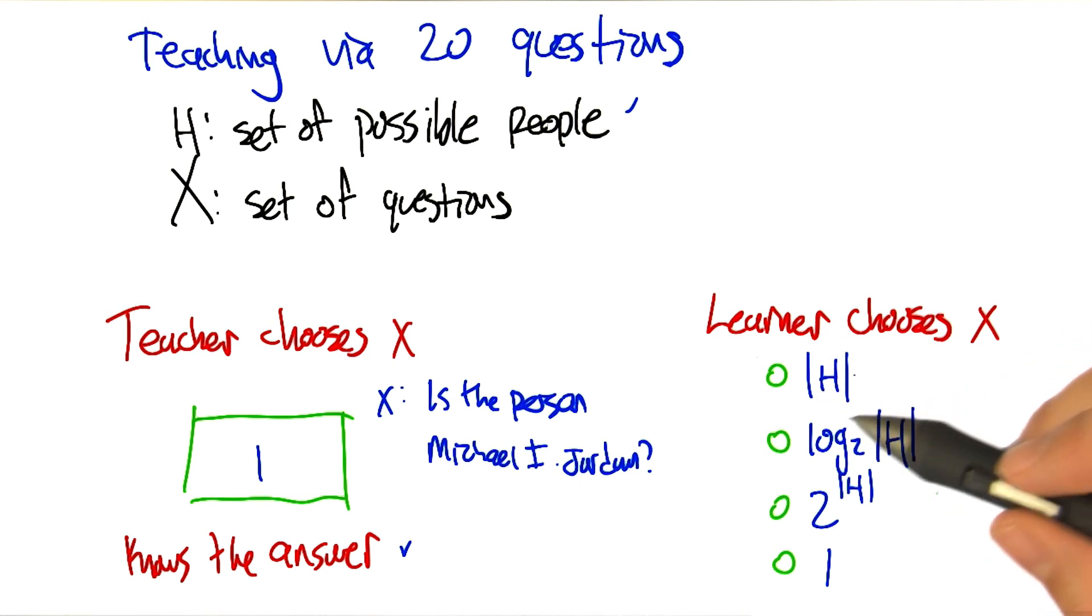So I gave four helpful formulae here, all in terms of the number of people that we have to choose from. Do we have to ask questions that is the size of the set of people? Is it going to be more like the log of the size of the set of people?